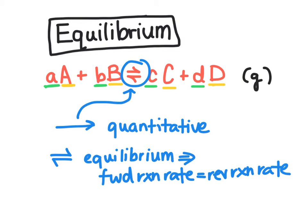If we look at our equation and think of A as our example, for every molecule of A that we react or use up, another molecule of A is produced by the reaction of our products. So what's going to happen is the concentration appears to be unchanging over time.